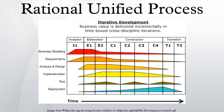Tasks — a task describes a unit of work assigned to a role that provides a meaningful result. Within each iteration, the tasks are categorized into nine disciplines: six engineering disciplines — business modeling, requirements, analysis and design, implementation, test, and deployment — and three supporting disciplines: configuration and change management, project management, and environment.